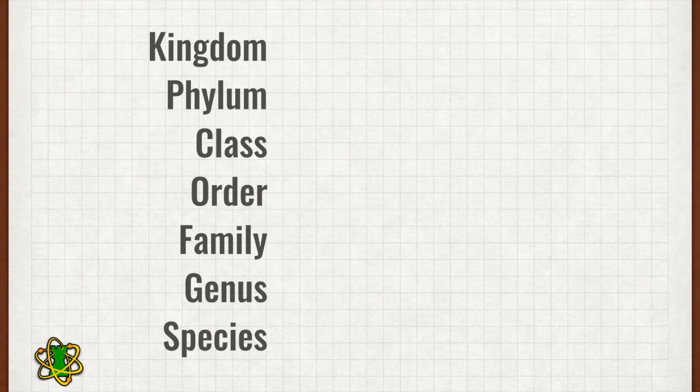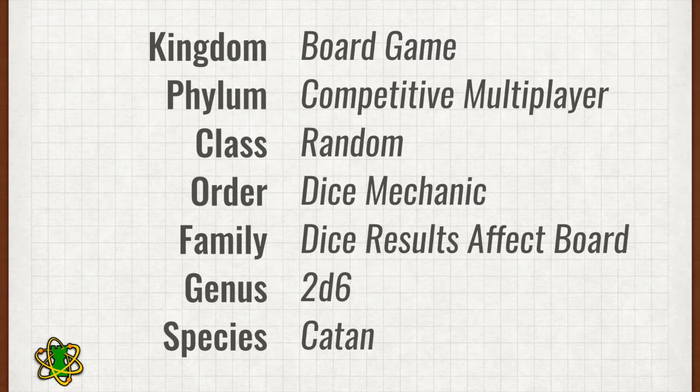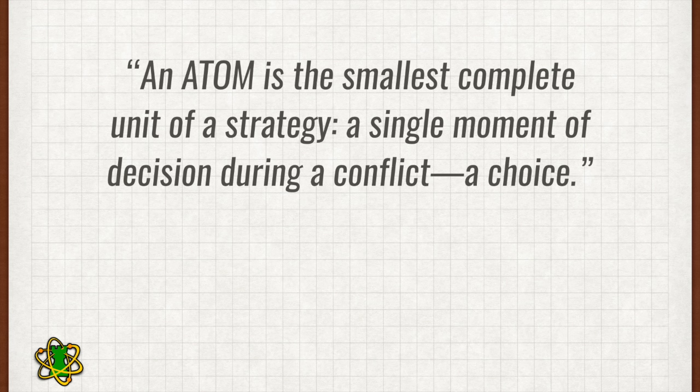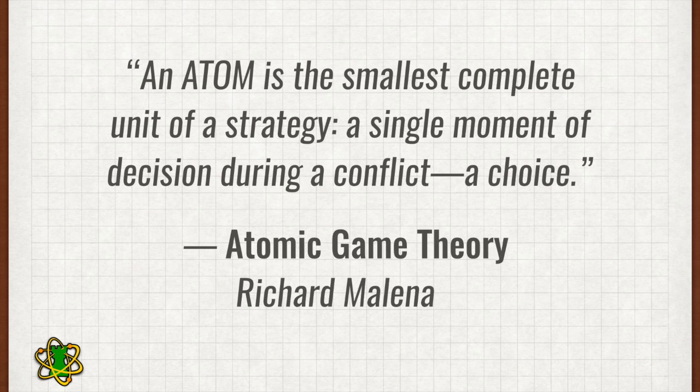But when you think about the strategy needed to win a game, an atom is just too big. Garfield is interested in studying games and classifying them into a huge taxonomical worldview. What I'm interested in is much smaller. I want to meld together these atomic and game theoretic concepts. For what we're doing here, an atom is the smallest complete unit of a strategy — a single moment of decision during a conflict, which is really just a fancy way of describing a choice. Every single choice you make during a game is worthy of study and analysis, whether that's the way you trade bricks for sheep in Settlers of Catan, or the way you defend in Twilight Imperium, or even the way you draft cards in Seven Wonders. By using game theory to study these small atomic choices, we can create the strategies that lead us ever closer to victory.